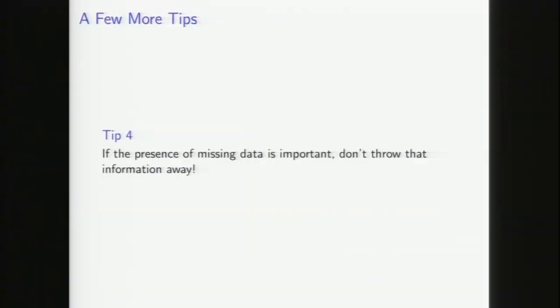One more tip: if you have a hunch that the fact that data is missing is important, don't throw that information away. Create a copy of your original dataset with masks to indicate which values were missing. You can then do your imputation — your best guess at the missing values — and concatenate that mask dataset onto your original. Then if you're feeding this into a deep neural network or a random forest, your machine learning algorithm still has that missingness information, which could be quite useful.